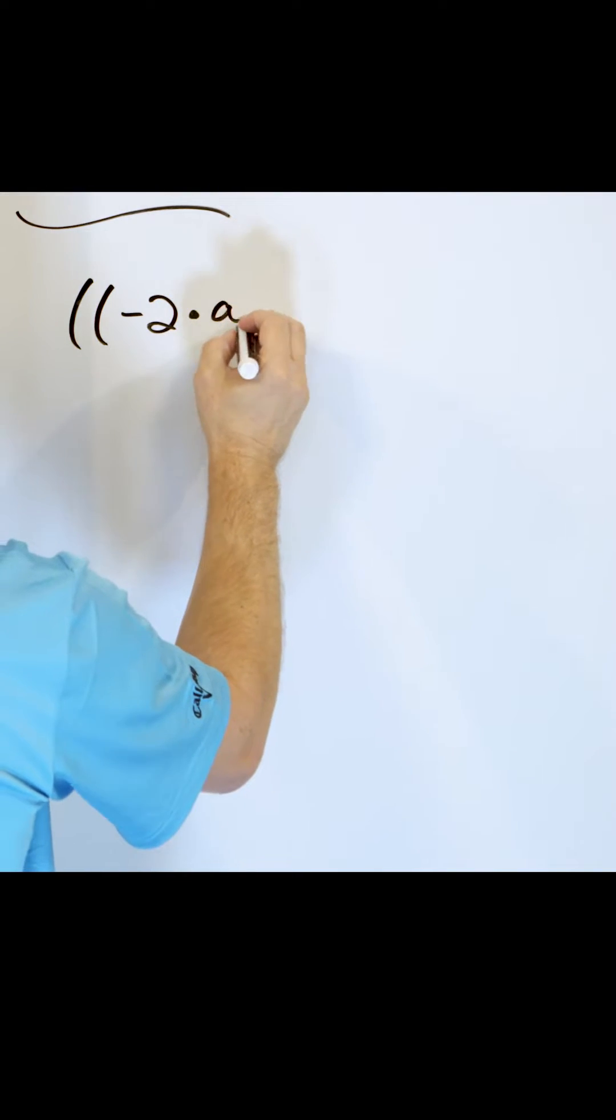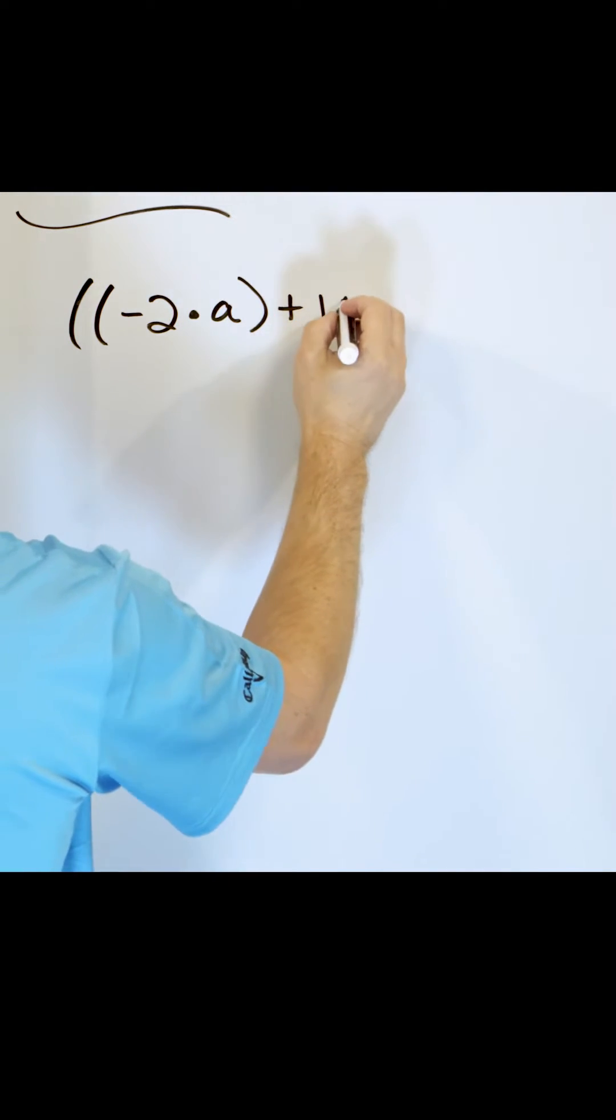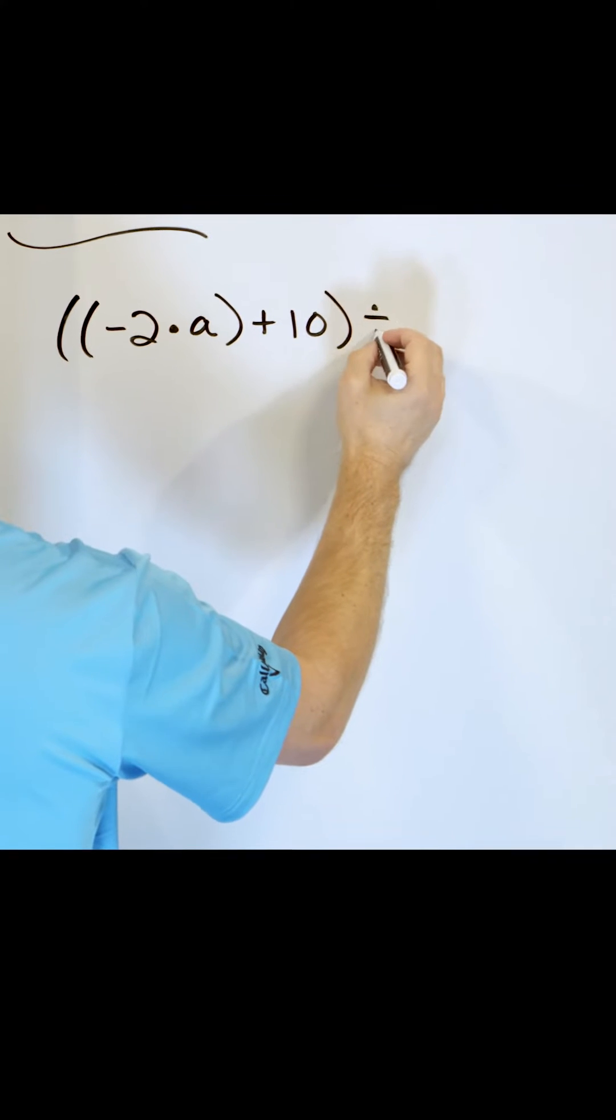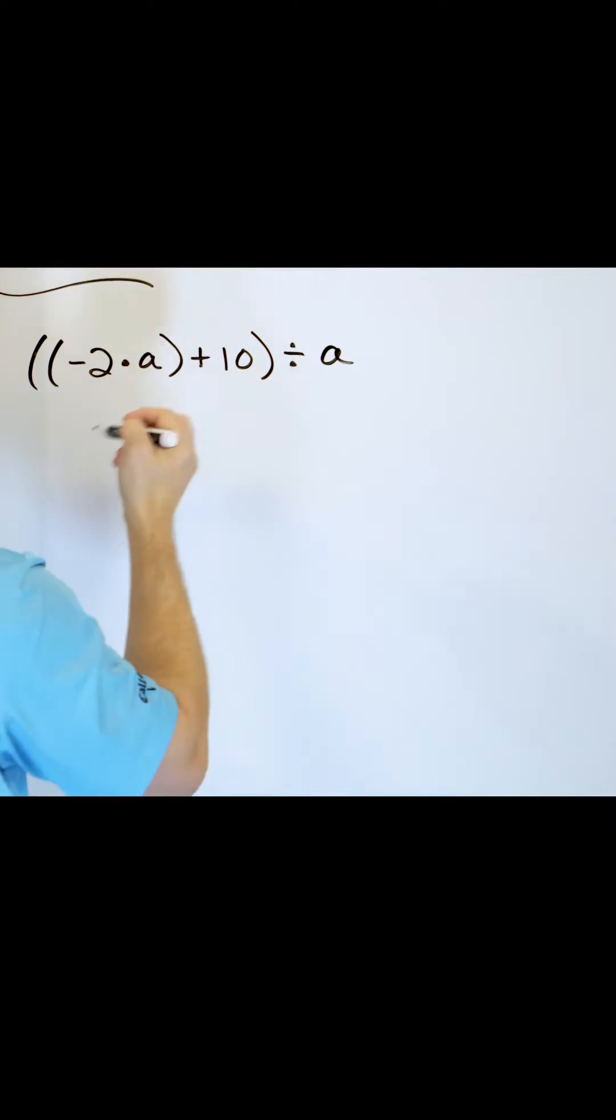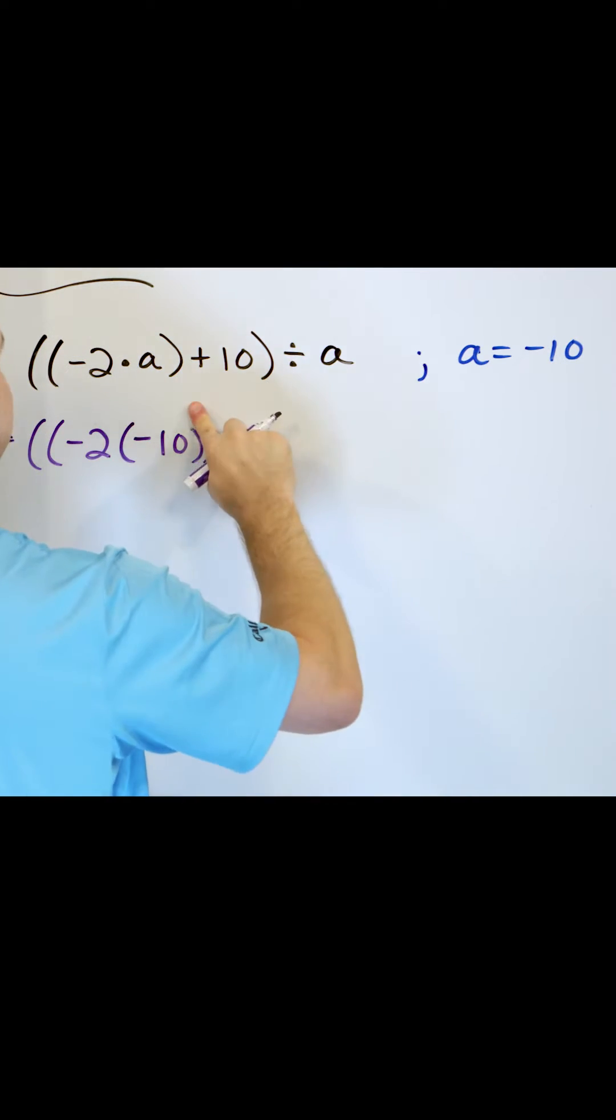Negative 2 multiplied by a, then we're adding 10 to it, close that off, and then we're going to divide by a. a is equal to negative 10.